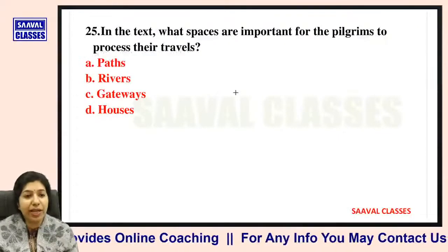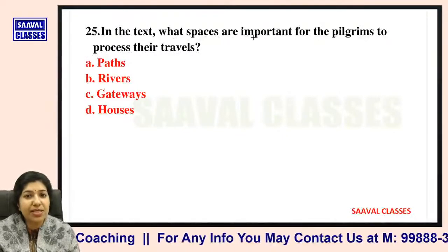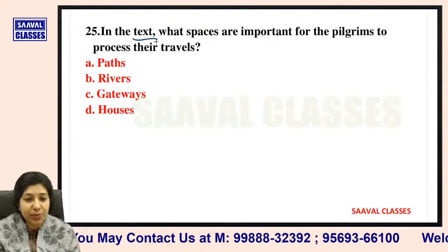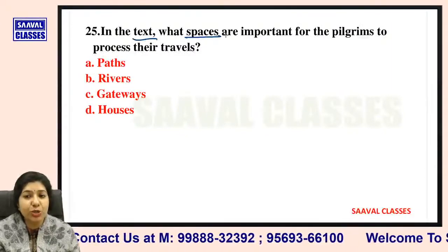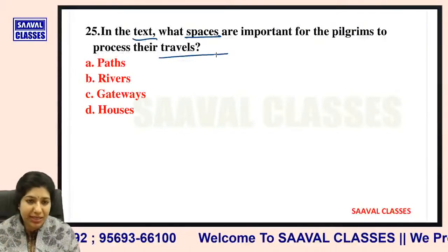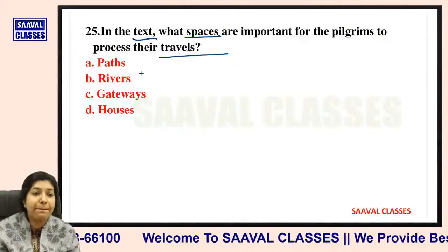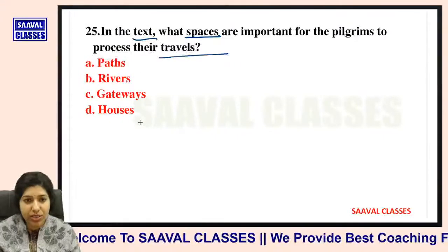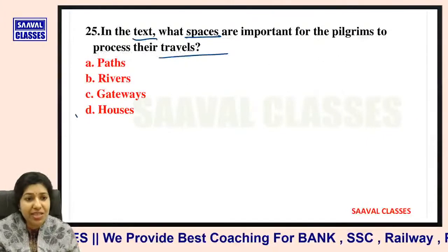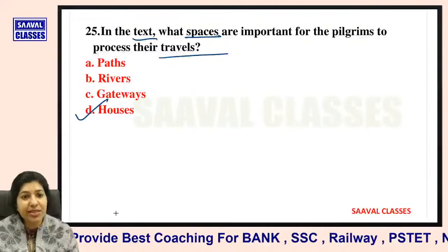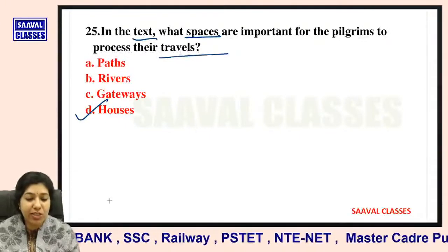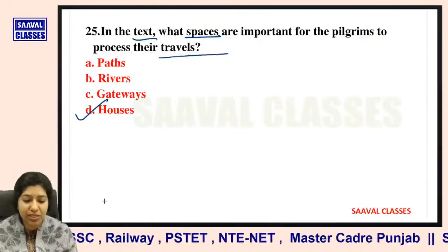Question number twenty-five: In the text, what spaces are important for the pilgrims to process their travels? Paths, rivers, gateways, or houses? The important spaces where pilgrims process their travels are their houses — they sit at home and plan and process their travels.